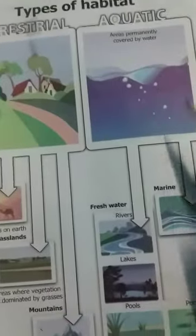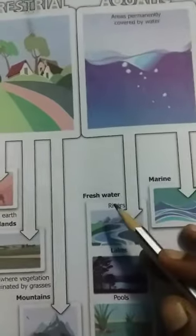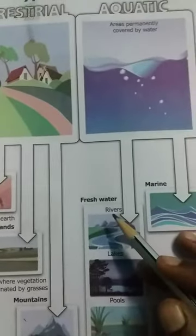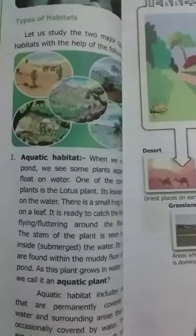In aquatic there are two types: freshwater habitat and marine. Now we are going to see freshwater habitat.